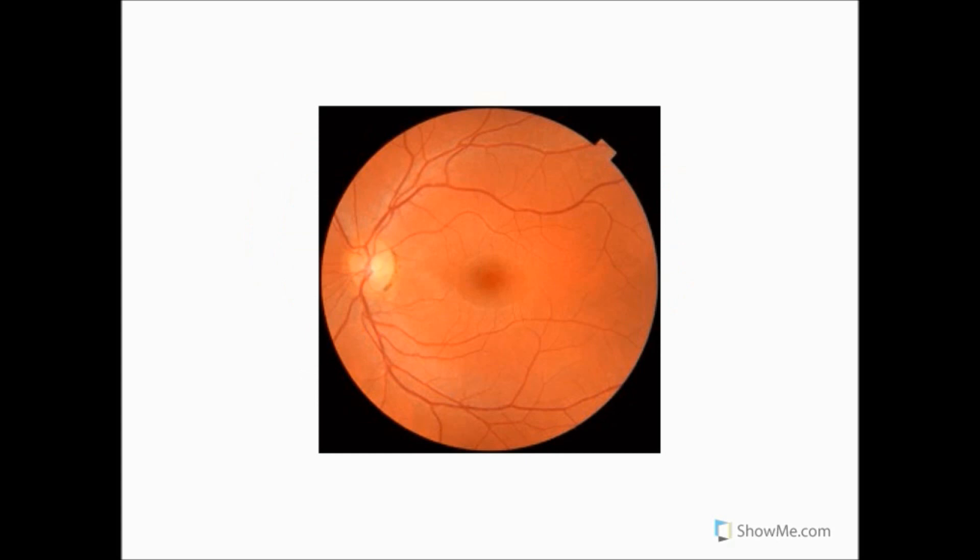The center of the visual field projects its image onto the fovea of the retina, which is found at the center of this region, known as the macula. The fovea has a very high density concentration of cone cells, which allows for especially high visual acuity.